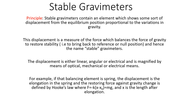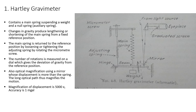The first type is the Hartley gravimeter. The Hartley gravimeter consists of two springs: first is the main spring, which is connected to the beam and suspends a weight; the other is the adjusting spring, also called the null spring or auxiliary spring. Whenever there is a change in the value of gravity, there is a corresponding change in weight and thus a change in the length of the main spring from the fixed reference position. The null spring is then introduced to return the main spring to its reference position.